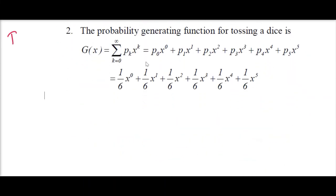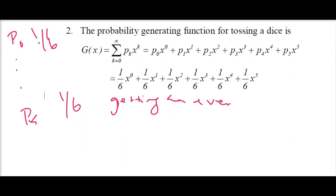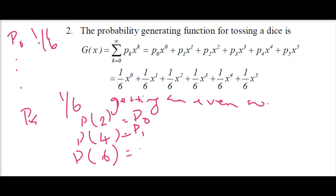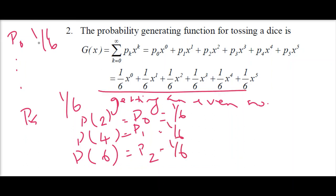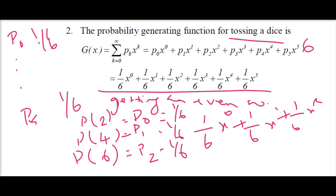If you toss a die, you have 6 probabilities, each equal to 1/6. For a probability generating function for getting an even number on a die, the possibilities are 2, 4, and 6. So probability of 2, probability of 4, and probability of 6 are taken as p0, p1, and p2. Each is 1/6. Since you have only 3 probabilities, you write 0 plus (1/6)·x power 1 plus (1/6)·x power 2 — only 3 terms (p0 to p2), whereas for a full die you would have 6 probabilities from p0 to p5.